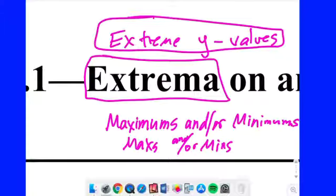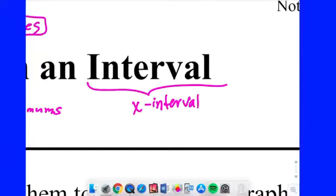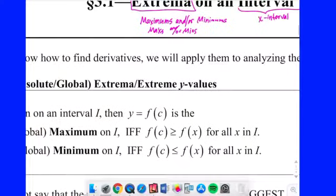So extrema are extreme Y values. You have maximums or minimums. That's what makes them extremes. It's not that they base jump into a hurricane and surf to shore while drinking Mountain Dew and eating Doritos. That would be pretty extreme, right? It's because they're either the high points or the low points on a specified interval. When we say interval, what type of X values are we implying? X interval, right? So that's our independent variable. So we look from left to right, and we're looking for maximum Y values or minimum Y values.